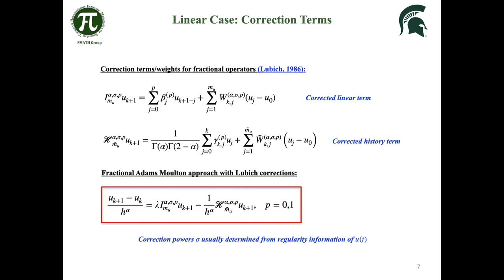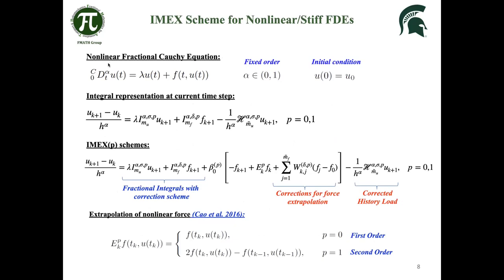Now, moving on to the nonlinear case. We introduce this nonlinear force term on the right hand side. We follow a similar approach, but now we do the same notion of local and history split, and we recast this into an integral form. The difference is that when we evaluate the force on the right hand side, we do an extrapolation of the force term. What we end up with is something similar to the Adams-Moulton approach and the corrected history loads that we had before, but we also have an additional extrapolation term for the force with proper correction terms. The way that we obtain these two IMEX schemes is that with first order and second order extrapolation, we recover a first and second order IMEX scheme.